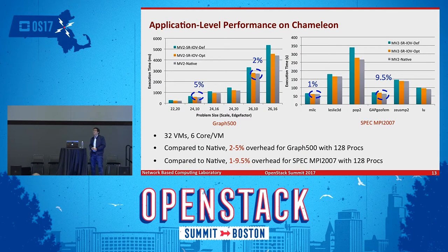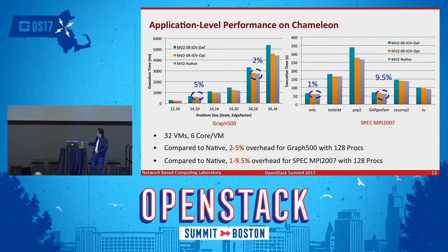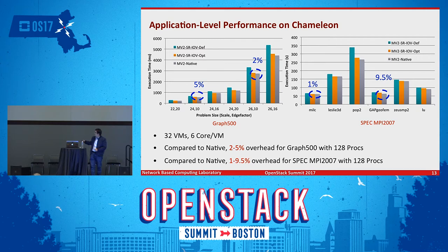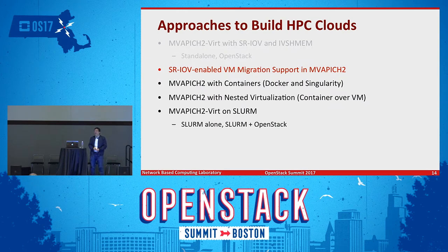Looking at the performance results, there are three bars. The green one shows default MPI on SR-IOV — good, almost close to native but not the best. The yellow bar is our optimized scheme: when we detect the path can be improved, we select the better path, making performance even closer to native. The maximum overhead for the SPEC MPI benchmark is less than 10%, which is what we achieved to make MPI aware of virtual machine environments.